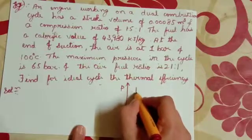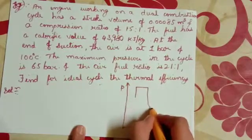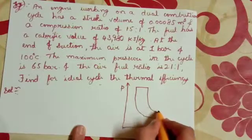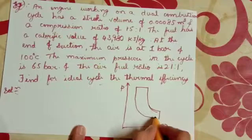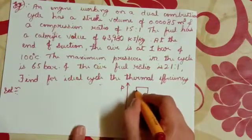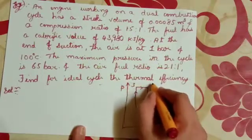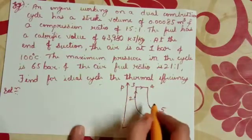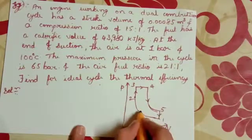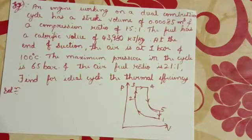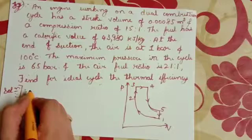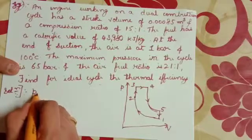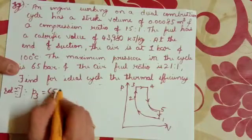For this, first we have to draw the PV diagram. This is the PV diagram. This is P3, this is 65 bar, this is given.